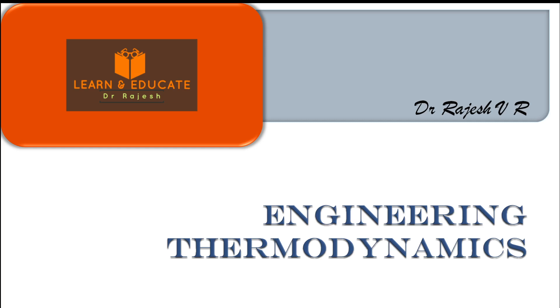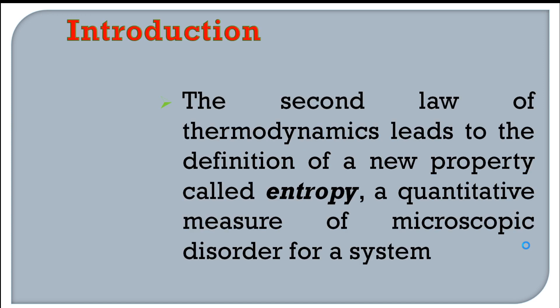Good morning students. In this session you'll be learning a new property defined by the second law of thermodynamics known as entropy. Entropy is a measure of disorder in a system. We can also say that entropy is a quantitative measure of microscopic disorder for a system. The irregularities, irreversibilities, or disorder within the system at the microscopic level is termed as entropy.